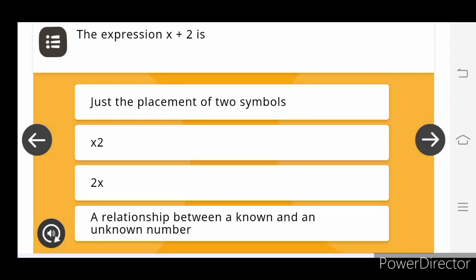The expression x plus 2 is just the placement of two symbols x and 2, is 2x, or is a relationship between a known and an unknown number. The right option is a relationship between a known and an unknown number.